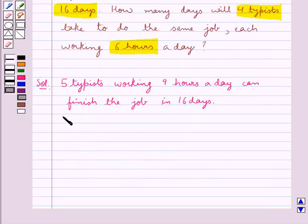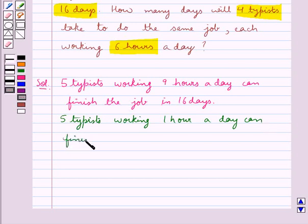Then 5 typists working 1 hour a day can finish the job in 16 into 9 days. This shows that less the number of hours, more would be the days to finish the same job.